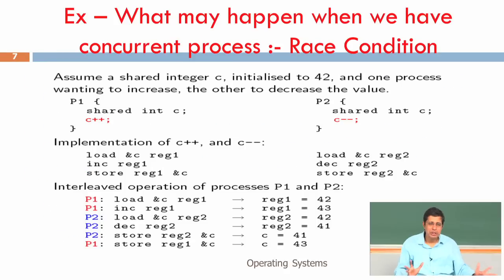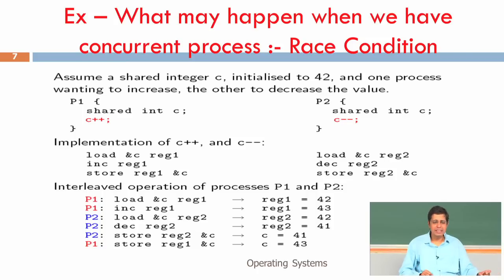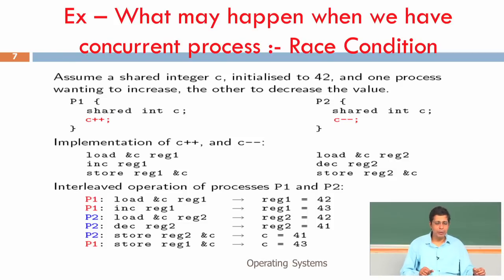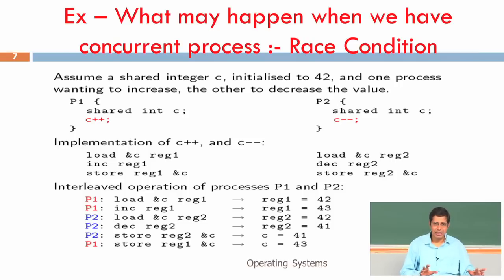Now let us make it more interesting. Say there are two programs P1 and P2 — both share one integer called C. Program P1 increments C (C++), program P2 decrements C (C--). Assuming P1 executes immediately followed by P2, the value of C should remain the same. If C starts at 42, after P1 then P2 execute, the answer should again be 42. But we will show that when P1 and P2 execute in an interlaced fashion, the answer can become 43.